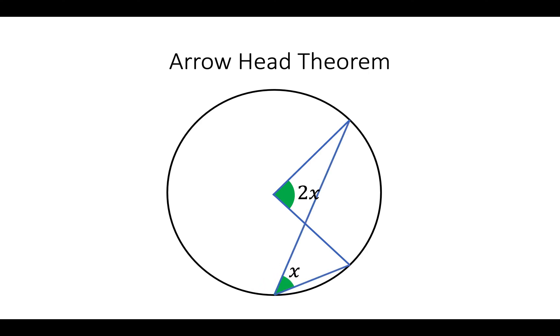It doesn't always look like an arrowhead — sometimes it's drawn slanted like this, so you just have to be careful. This point here has to be the exact centre of the circle.